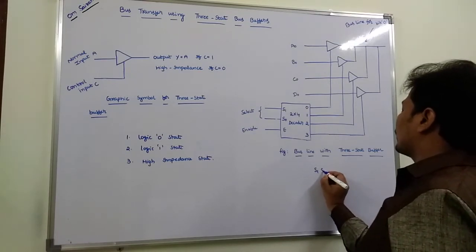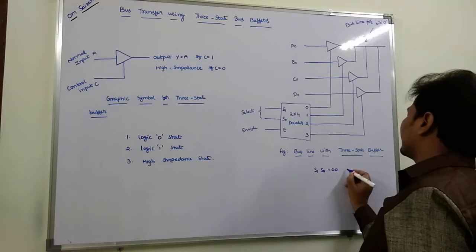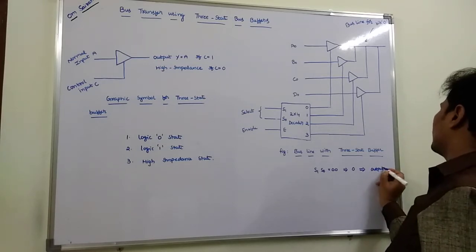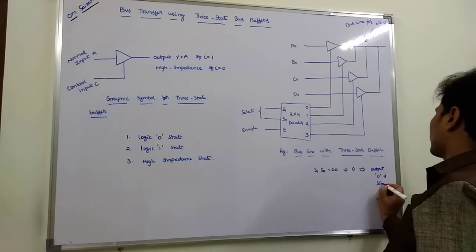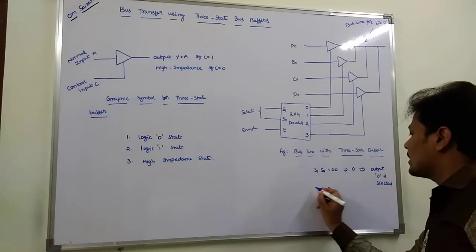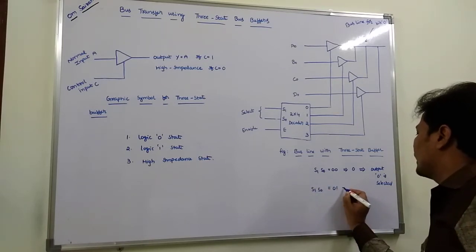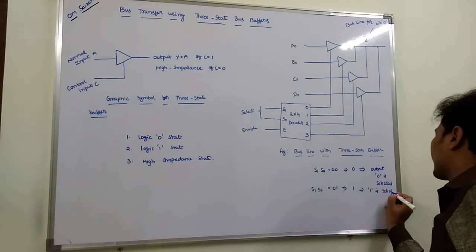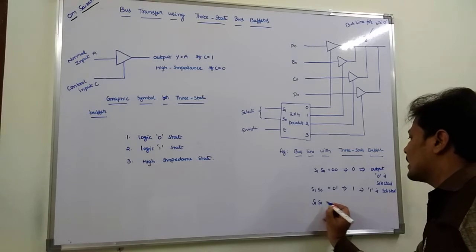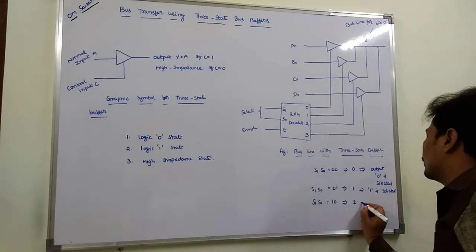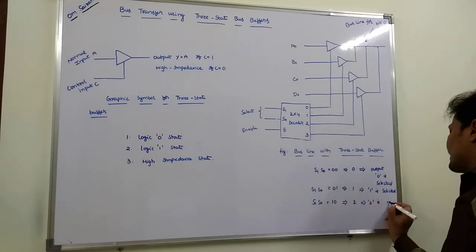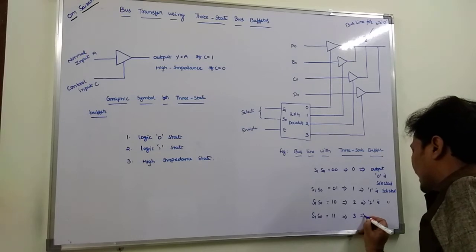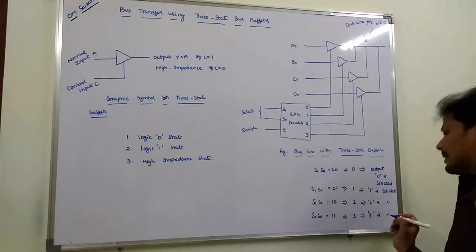If S1 S0 equals 0 0, the decimal equivalent is 0 and output line 0 is selected. If S1 S0 equals 0 1, the decimal equivalent is 1 and output line 1 is selected. If S1 S0 equals 1 0, the decimal equivalent is 2 and output line 2 is selected. If S1 S0 equals 1 1, the decimal equivalent is 3 and output line 3 is selected.